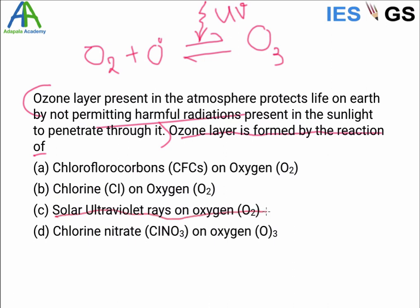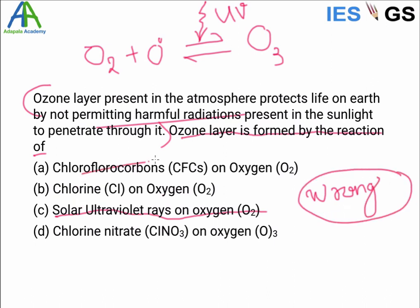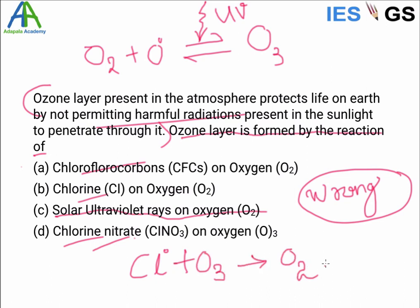The answer is that solar ultraviolet rays acting on oxygen help in the formation of ozone. Be careful with this question — you might see chlorofluorocarbons, chlorine, and chlorine nitrate in the options and be tempted to select them. However, those are related to ozone destruction, not formation. Chlorine radicals (from CFCs and chlorine nitrate, which is a storehouse of chlorine radicals) react with ozone and convert it back to oxygen, accelerating the reverse reaction — destroying the ozone layer. Since the question asks about formation, the answer is option C: solar ultraviolet rays on oxygen.